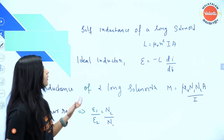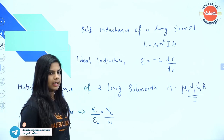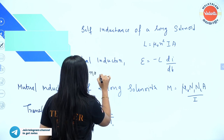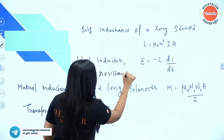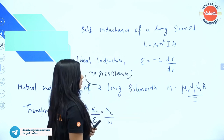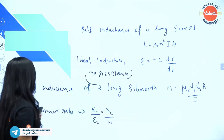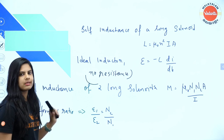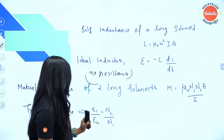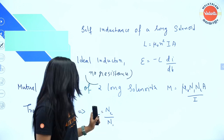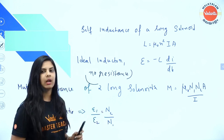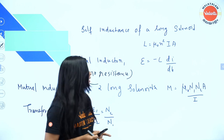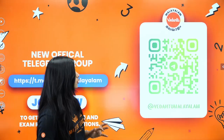The self-inductance of a long solenoid is L = μ₀N²IA. An ideal inductor has no resistance. The EMF equation is EMF = −L di/dt. For a transformer, the ratio of EMF to output equals the ratio of primary turns to secondary turns.